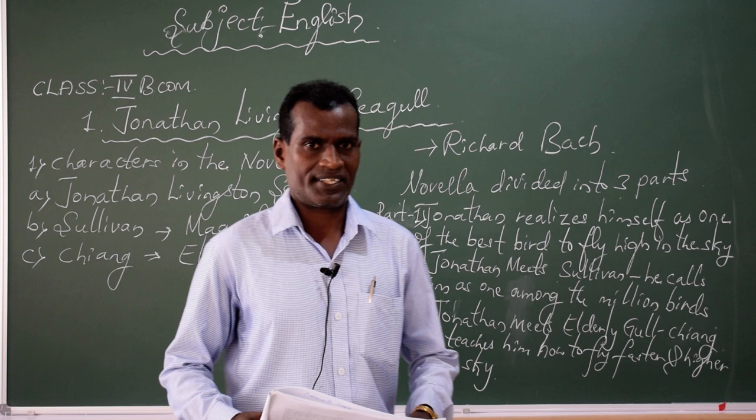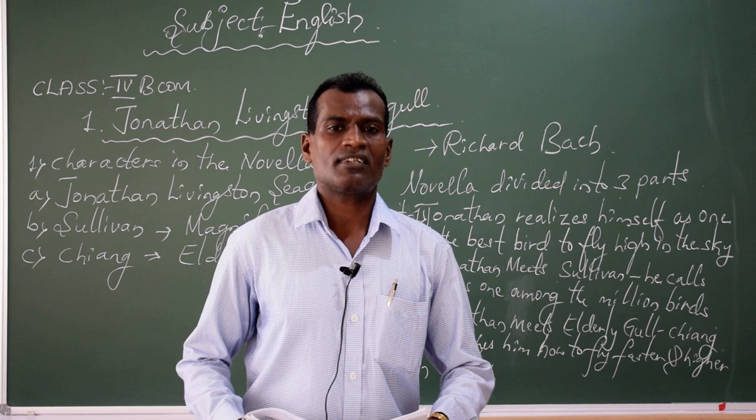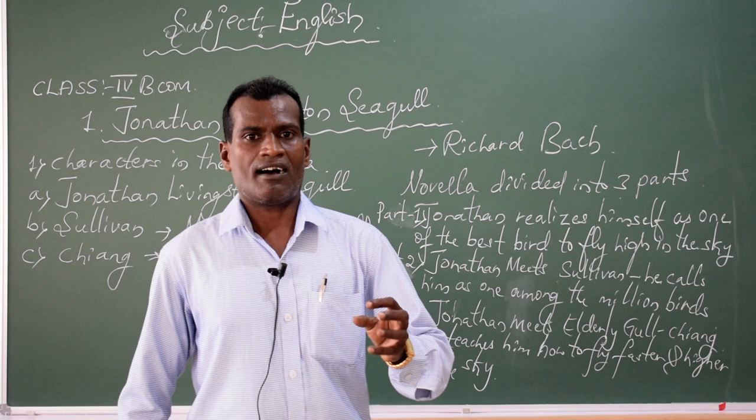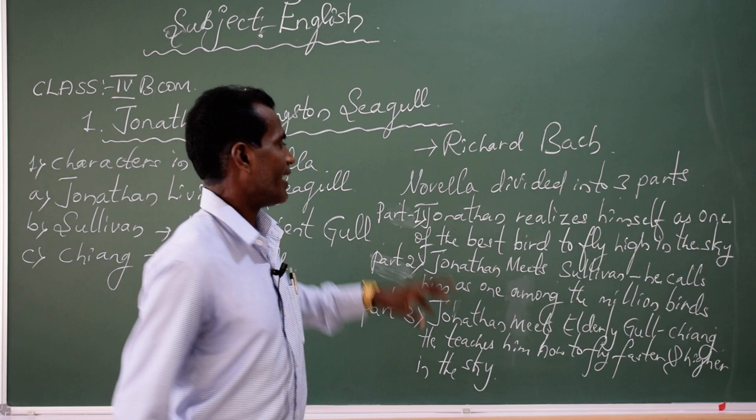This novella describes about Jonathan Livingstone Seagull. It explains about how a seagull bird can fly higher and higher in the sky, and faster and faster. Today I would like to talk about a few characters in the novella. Novella — what is a novella?